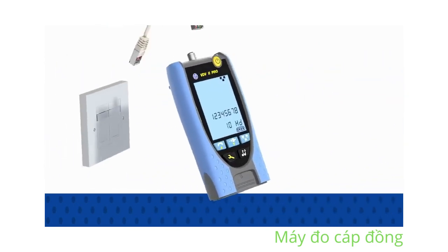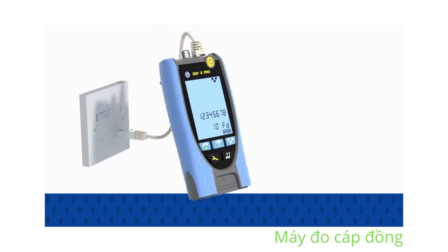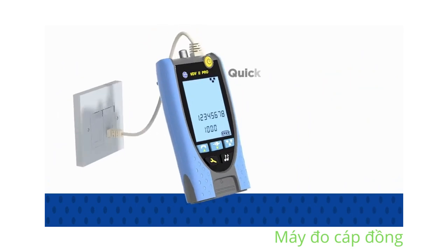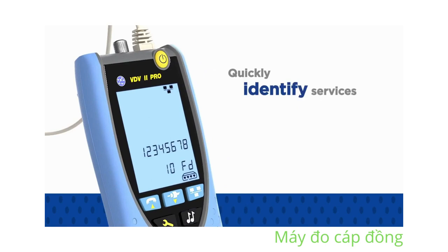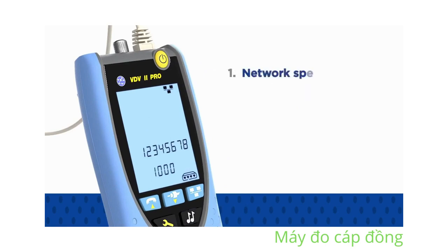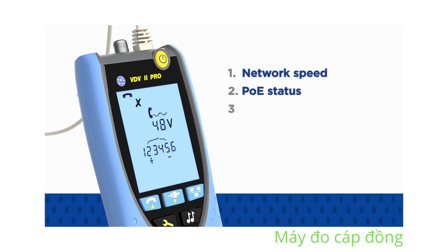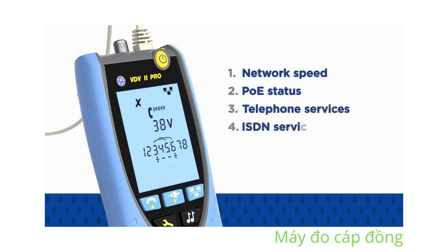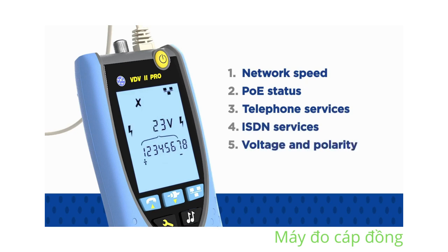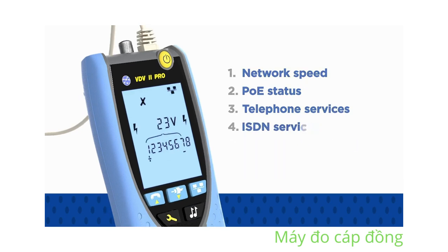Additionally, when the PRO is plugged into any RJ11 or RJ45 outlet, it will quickly identify services on the port, including network speed, power over Ethernet status, analog or digital telephone services, ISDN services, or the voltage and polarity of unrecognized services, to help diagnose network faults quickly.